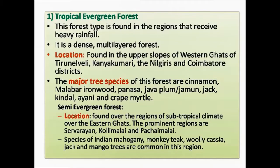Tropical evergreen forests are found in the upper slopes of the Western Ghats in Tirunelveli, Kanyakumari, near the Nilgiris, and Coimbatore districts. The major tree species include cinnamon, Malabar Rhynewood, Panasa, Java Plum (Jamun), Jack, Kindle, Avani, and Grape Myrtle. Semi-evergreen forests are a combination of both evergreen and deciduous forests and are found in the hills of the Eastern Ghats, especially in Sarvarayan, Kollimalai, and Pachamalai hills. Common species include Indian Mahogany, Monkey Teak, Ullikasia, Jack, and Mango.